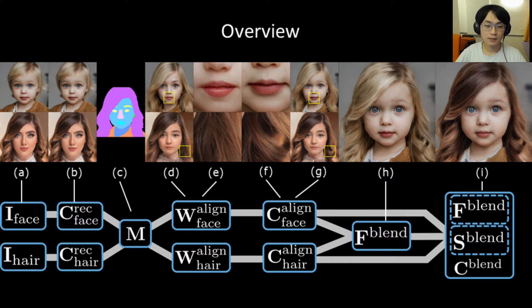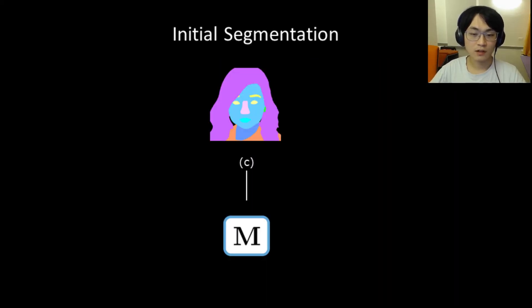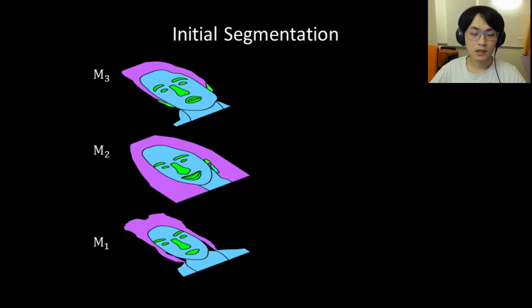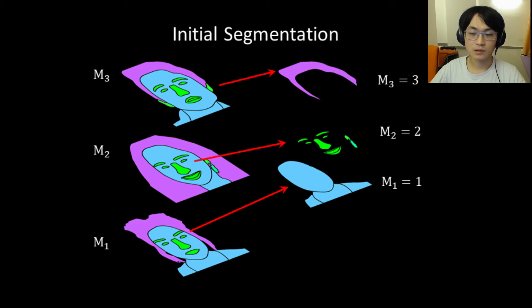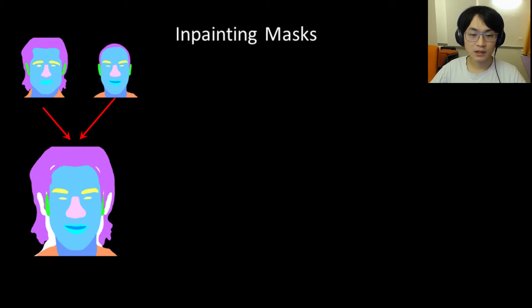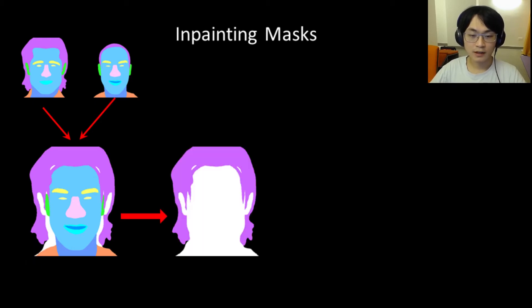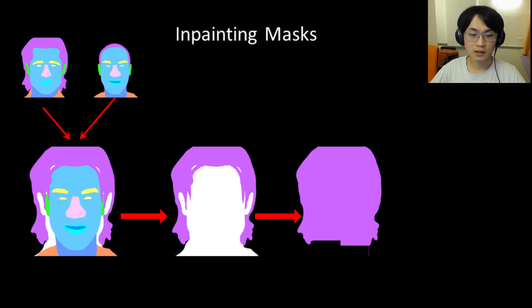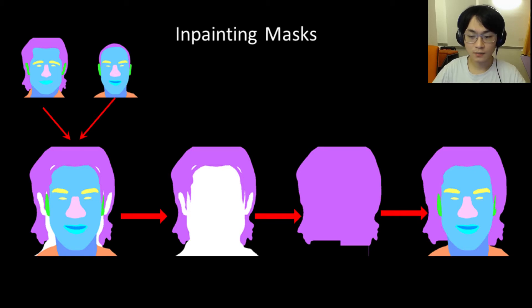First, we will talk about the target mask. In order to create composited images, the first step is to construct a segmentation mask M. Specifically, we select the reference images, segment them, and select the regions in the reference image that should be copied to the target image. To construct a target mask automatically, segmentation regions are sorted from back to front and then composited over each other. Some pixels may not be covered by any of the segmentation masks, and in that case a portion of the target mask will be inpainted using a heuristic method before the regions are composited. Alternatively, users can manually edit the target segmentation masks, although none of the results we show are based on that.